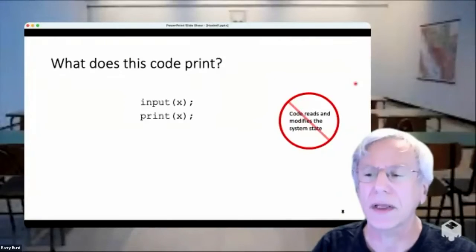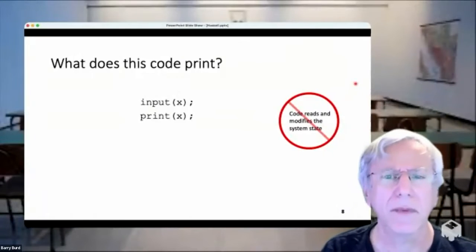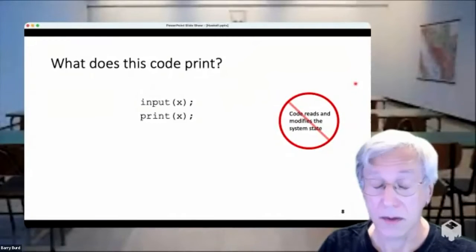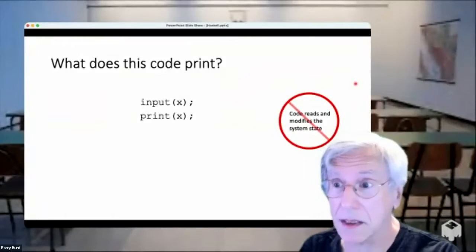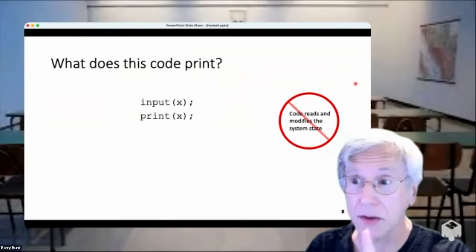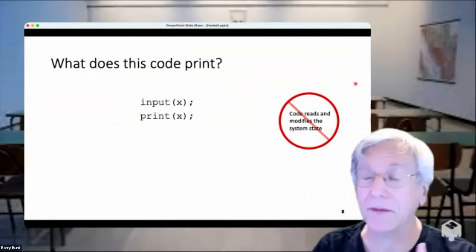Someone asks if Leibniz was famous for monads. Barry clarifies it's a category theory thing. Actually, Saunders Mac Lane took the word 'category' from Aristotle and the word 'monad' from Leibniz — Saunders Mac Lane being the discoverer or inventor of category theory. Barry notes that all category theorists are crazy — he's met about five of them.